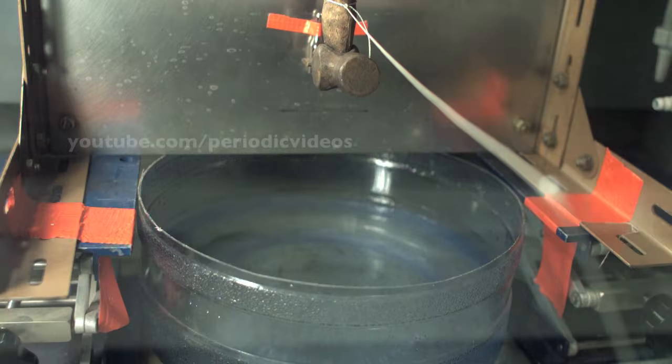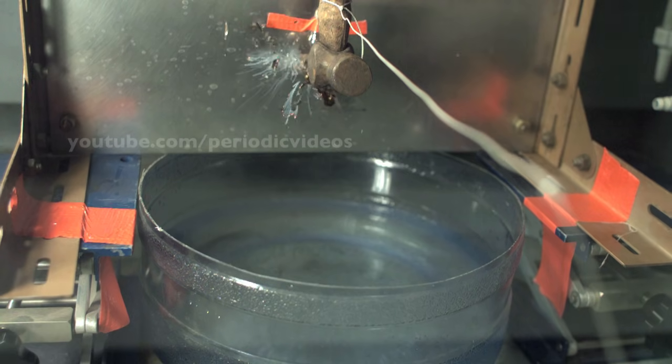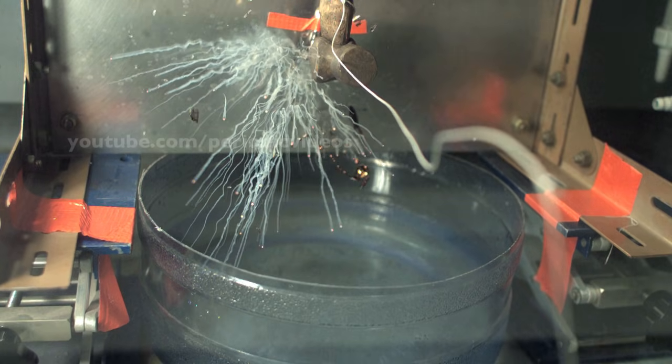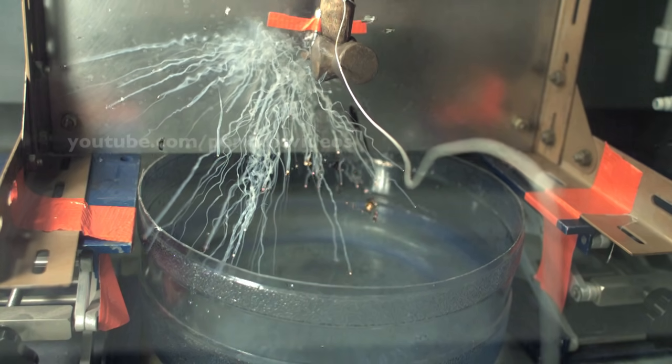When you break the ampoule, the shock of breaking it broke up the caesium into quite a few little droplets. You can see these droplets spreading out and falling towards the water.